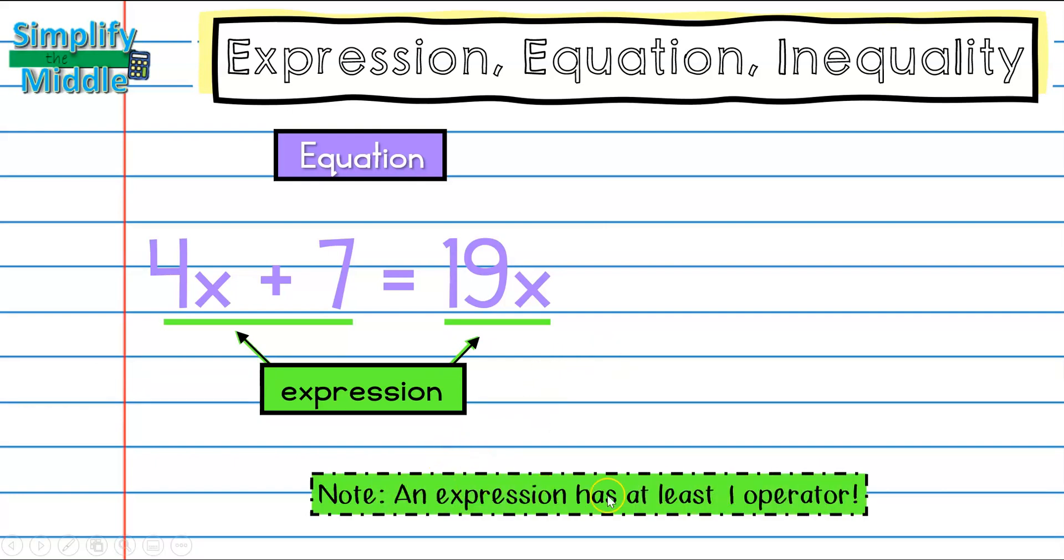Remember, an expression has to have at least one operator, so a number standing by itself would not be an expression. Here we have 19x. Let's take a closer look at 19x. 19x really means 19 times x, so the operator here is multiplication.